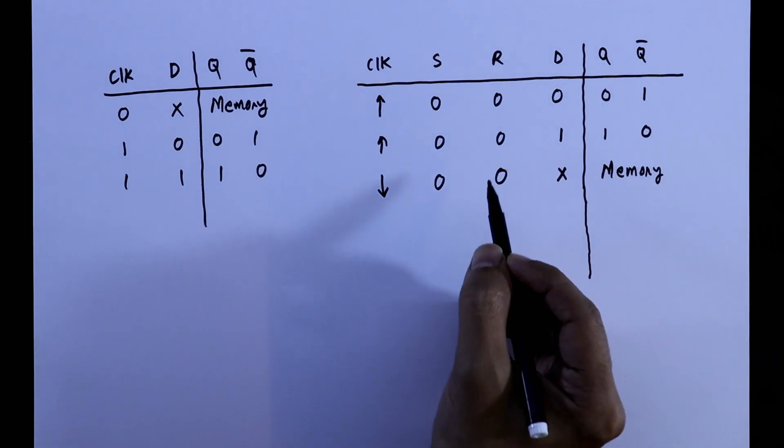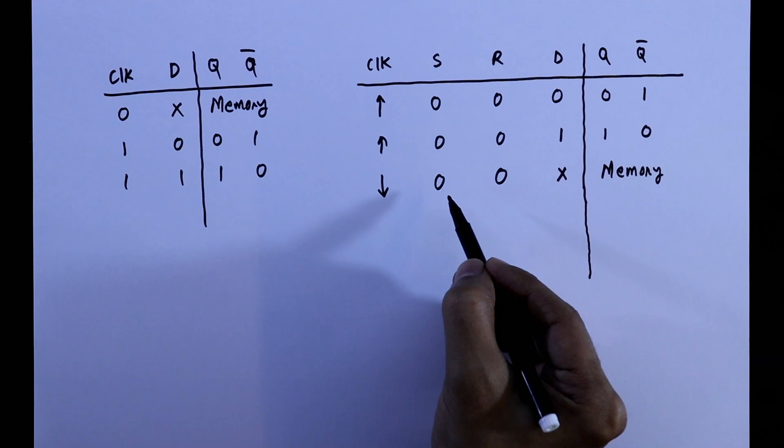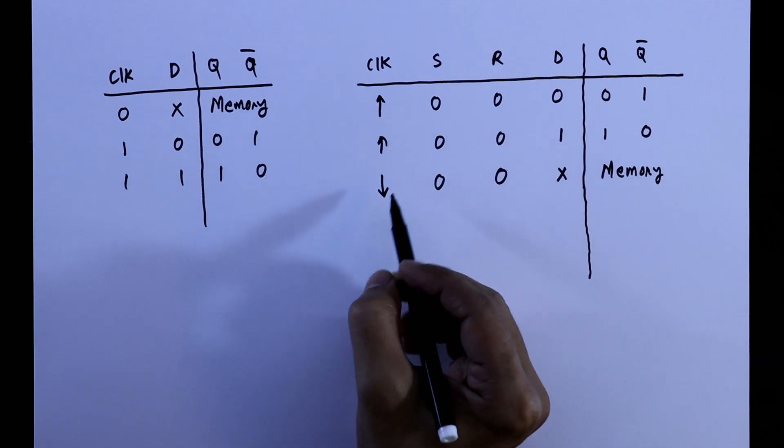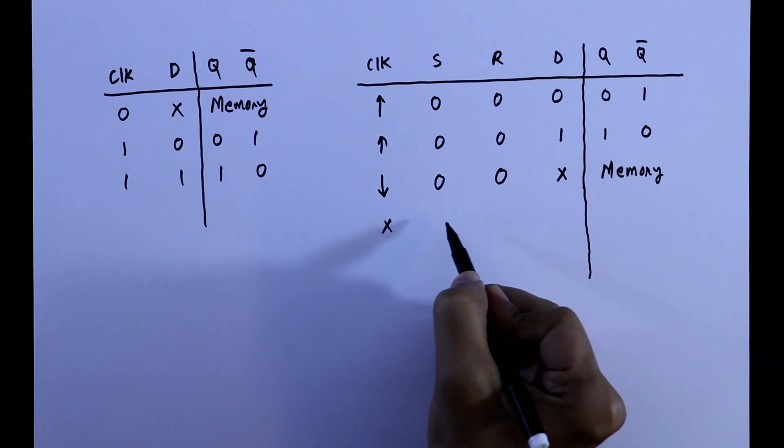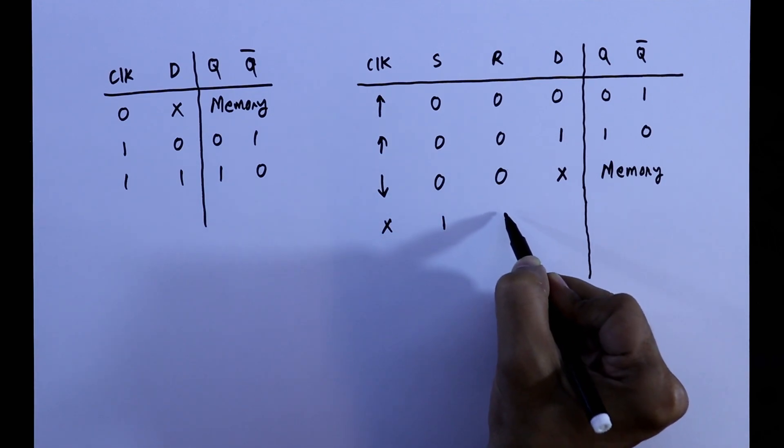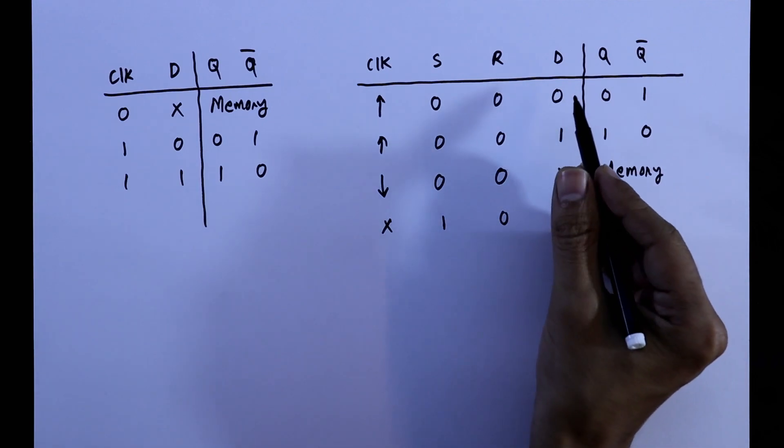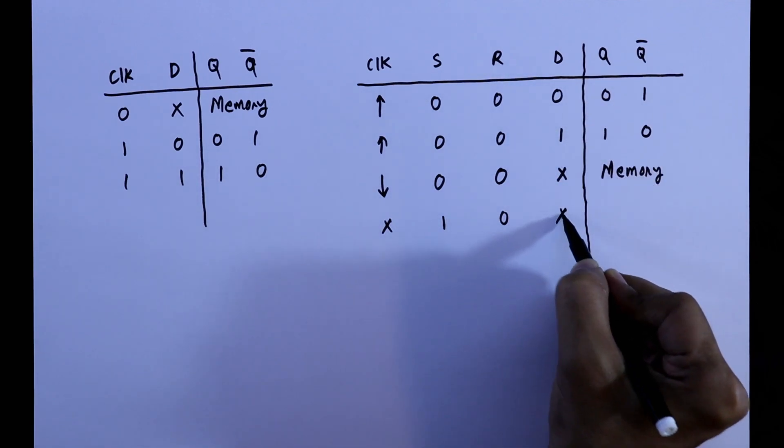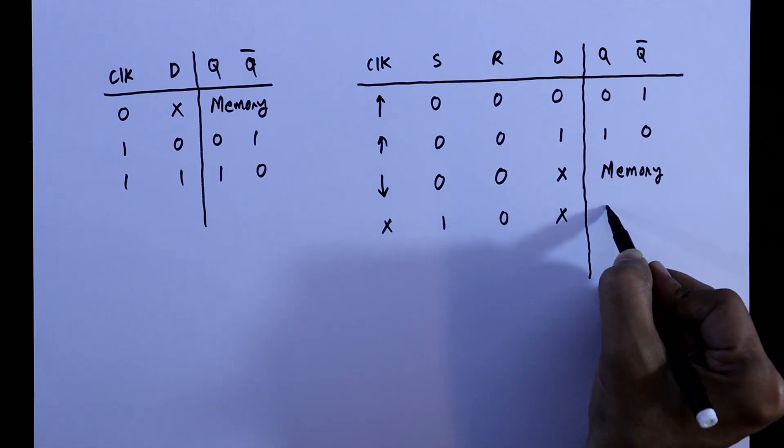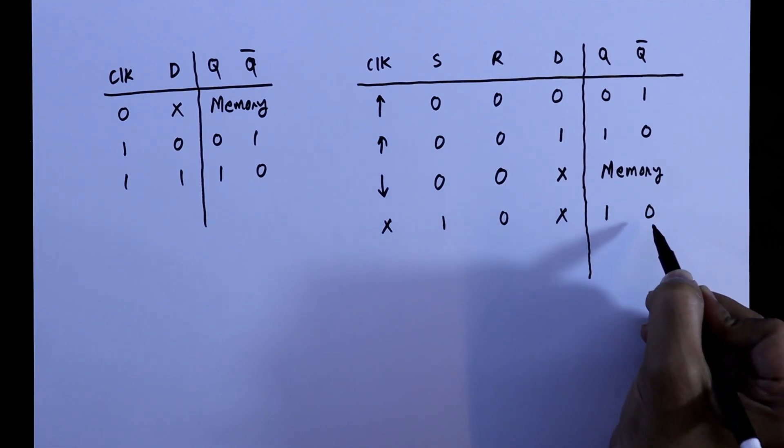Set. Now, if we keep set or reset, that is any one of these is 1, then it doesn't matter whether clock is 0 or 1. Set is 1, if set is 1, then obviously reset will be 0, then D also doesn't matter whether it is 1 or 0. If set is 1, then Q will be 1, Q bar will be 0.